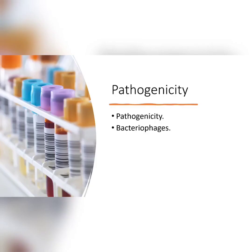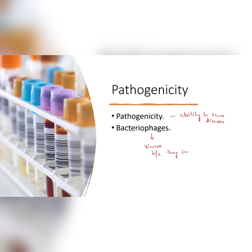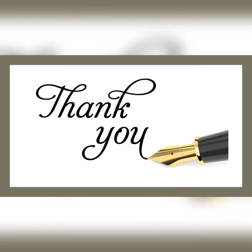Next is pathogenicity. The ability of a microorganism to cause disease is called pathogenicity. Pathogenicity is a type of dramatic characteristic — certain microorganisms are pathogenic for animals or plants, and some may cause disease in other microorganisms as well. For example, viruses called bacteriophages infect and destroy bacterial cells, which is a key characteristic of viruses.